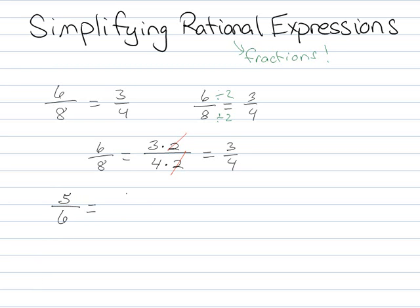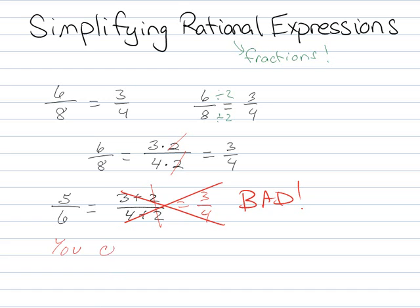What sometimes people will do, you would never say that this is true, right? 5/6 is clearly not equal to 3 fourths. But what sometimes people do when they're doing math is they'll do something the equivalent of doing this and say, oh look, it's 3 fourths, which is bad. So pretty much the most important thing to remember whenever you're simplifying anything in a fraction, any kind of rational expression, is that you can only cross things out that are multiplied by each other.